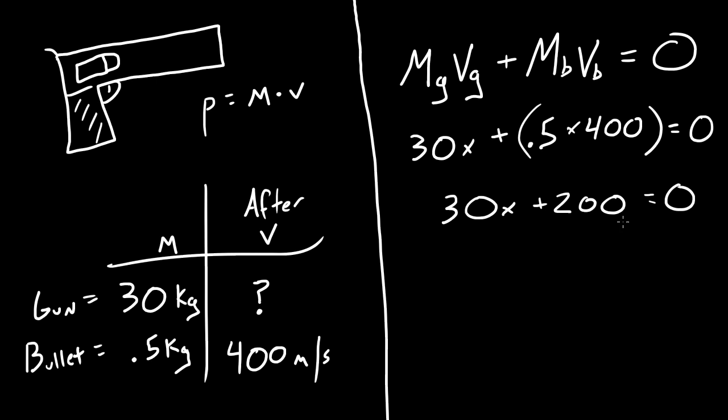Now, you guys can probably figure it out from here, but in case you don't know what to do, in order to figure out x, what you need to do is subtract 200 from each side. You get 30x equal to negative 200, and the velocity of the gun is x, so what we need to do is get x alone. Take negative 200, and throw it over 30, and you end up with x equal to negative 6.6 repeating, and the units that we were working with is meters per second.